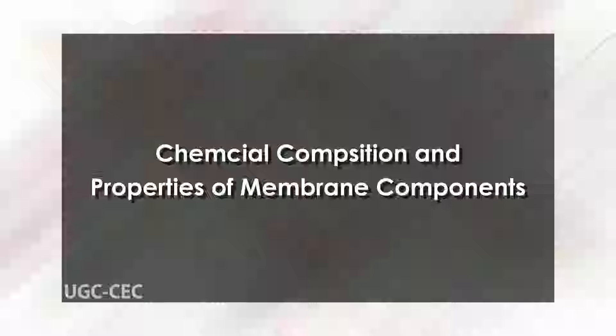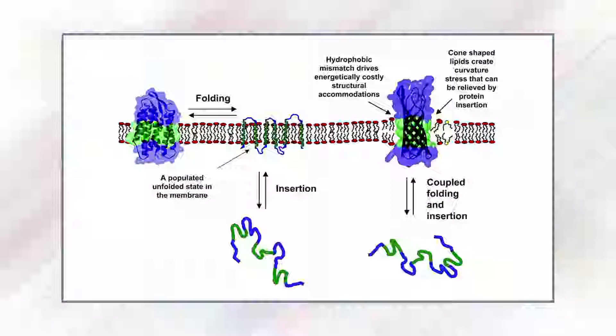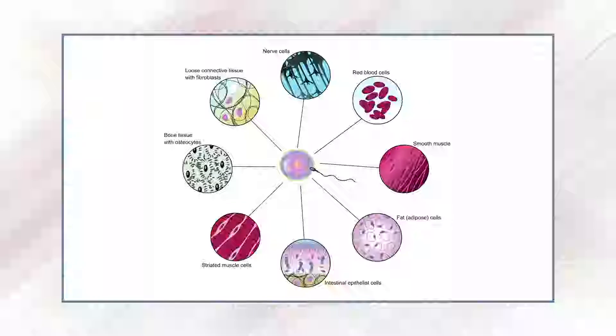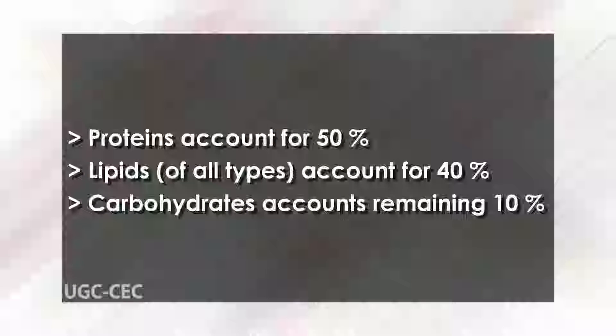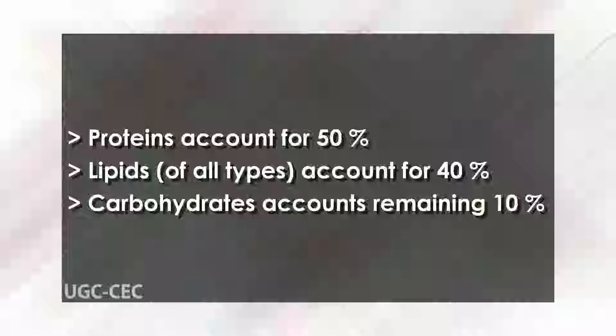Let us first discuss chemical composition and properties of membrane components. The principal components of the plasma membrane are lipids, proteins, and carbohydrates. For a typical human cell, proteins account for about 50 percent of the composition by mass, lipids account for about 40 percent, and the remaining 10 percent comes from carbohydrates.